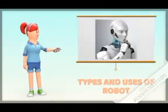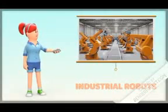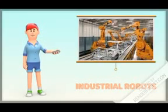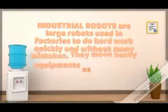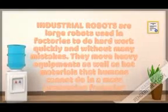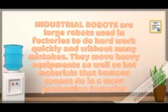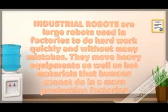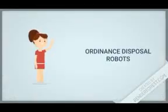Types of robots and their uses. We have several types of robots, but for the purpose of this lesson we'll talk about a few. First, industrial robots are large robots used in factories to do hard work quickly and without many mistakes. They move heavy equipment as well as hot materials that humans cannot do in mass production factories.